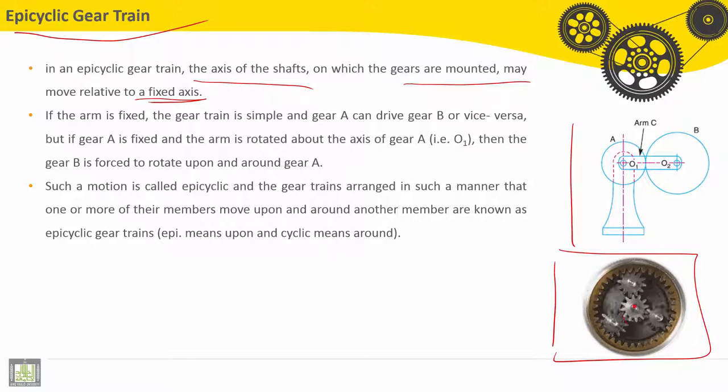If the arm is fixed, the gear train is simple and gear A can drive gear B and vice versa. If this arm is fixed, gear A rotates and drives gear B.